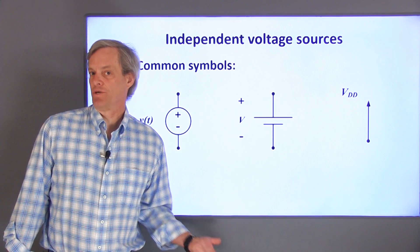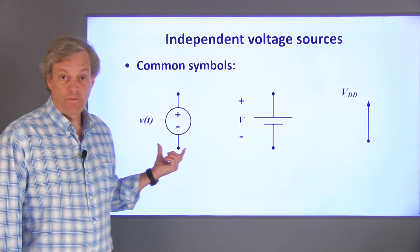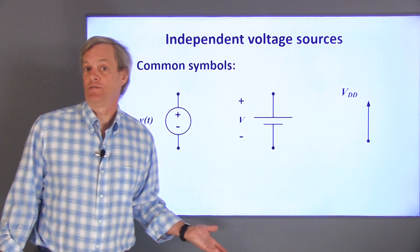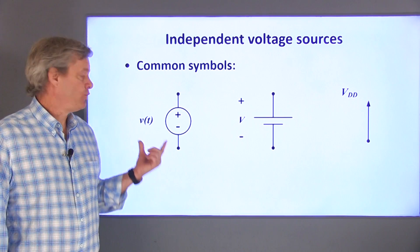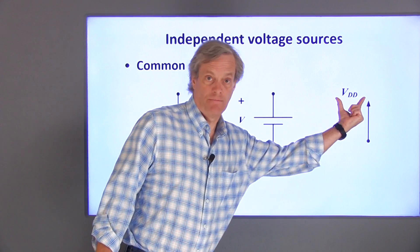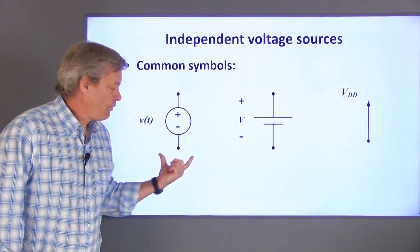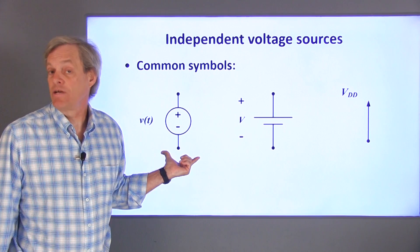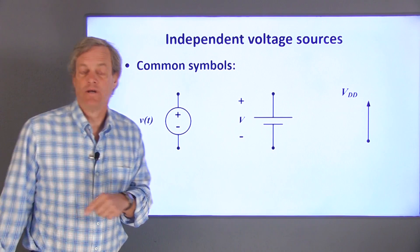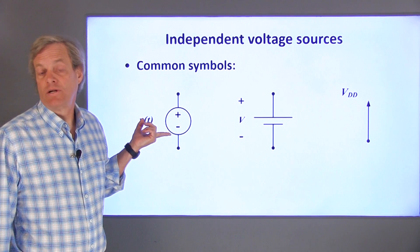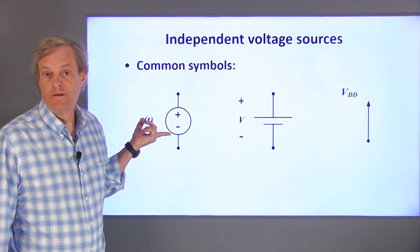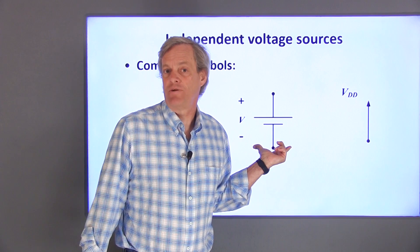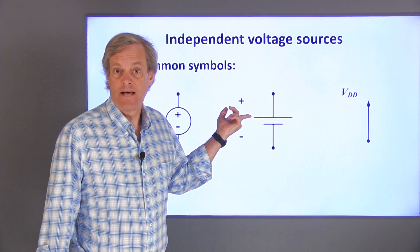First, I'll talk about voltage sources. These are three common symbols used to represent ideal, independent voltage sources. In all cases, the voltage being supplied is labeled next to the symbol. This circle with the plus and minus sign inside it is used to indicate either a time-varying or a constant voltage. The plus and minus signs indicate which terminal has the assumed higher voltage. This symbol is for a constant voltage source, usually interpreted as a battery. The longer line has the higher voltage.